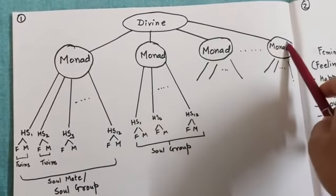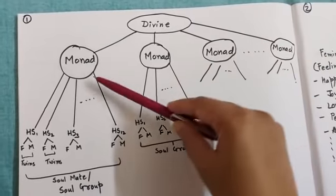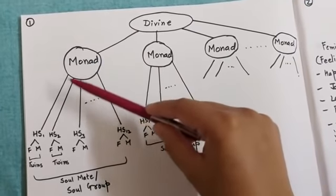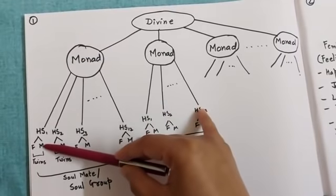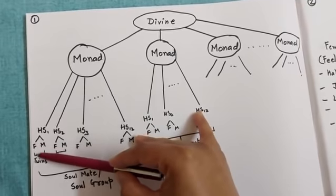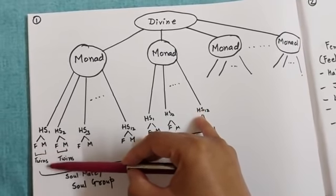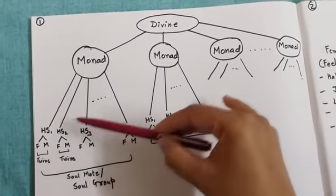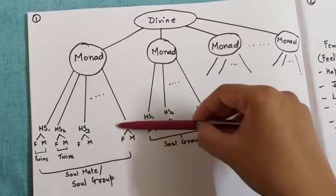Each monad splits into different higher selves, and each higher self is then split into male and female. This male soul or female soul we call twins, and the group of male and female souls branching from one monad forms your soul groups.